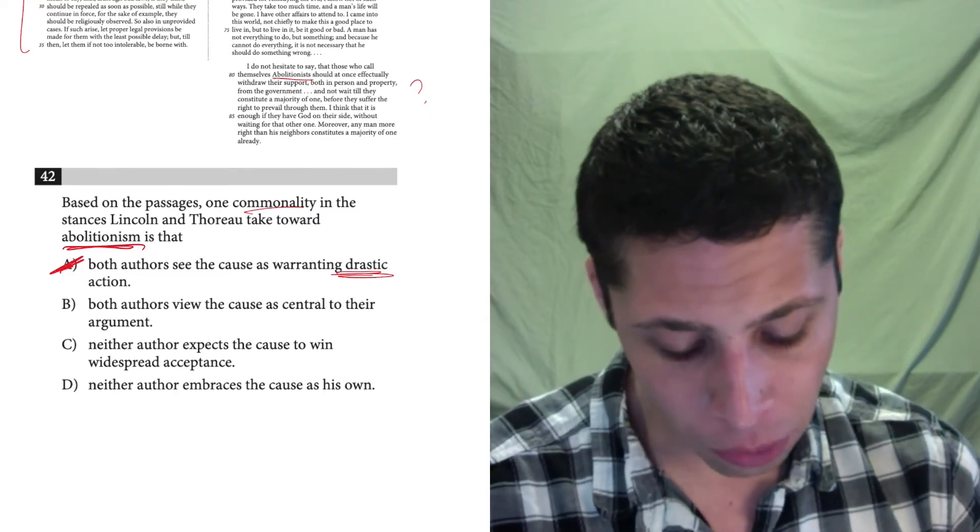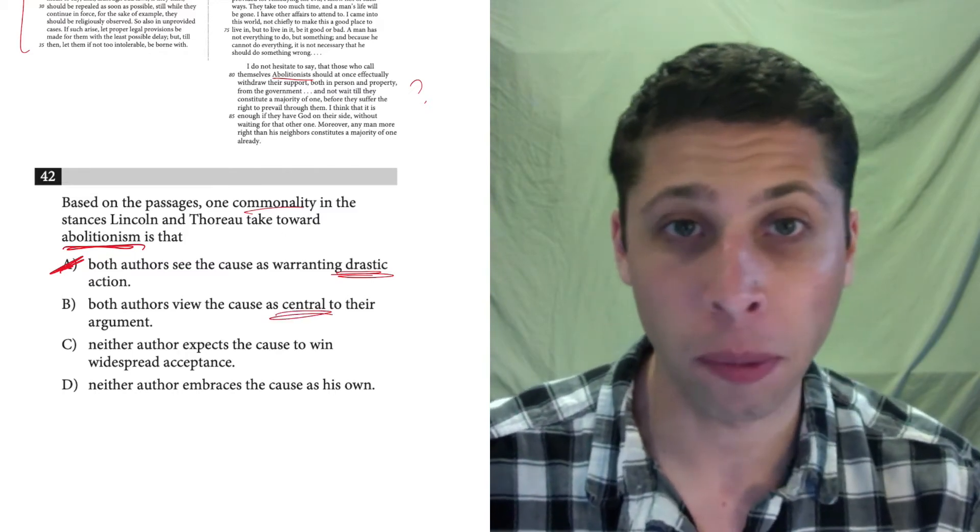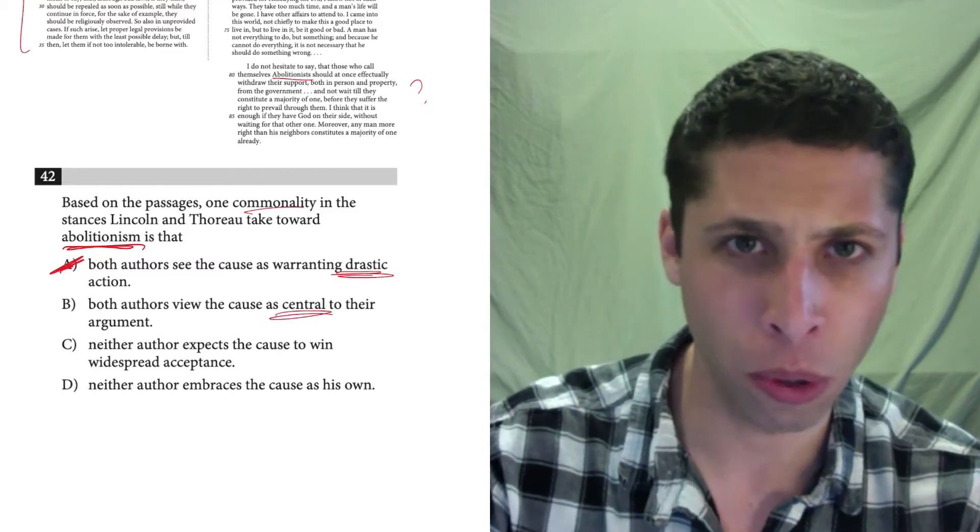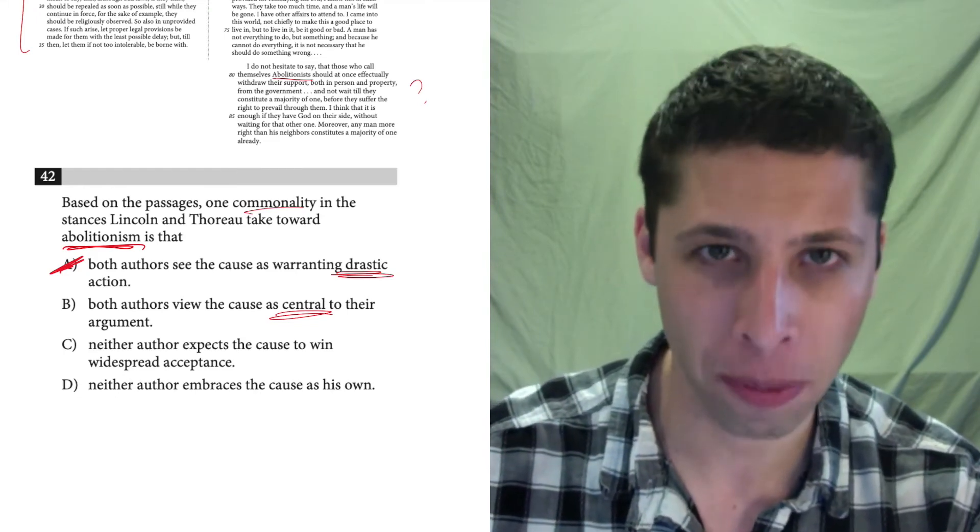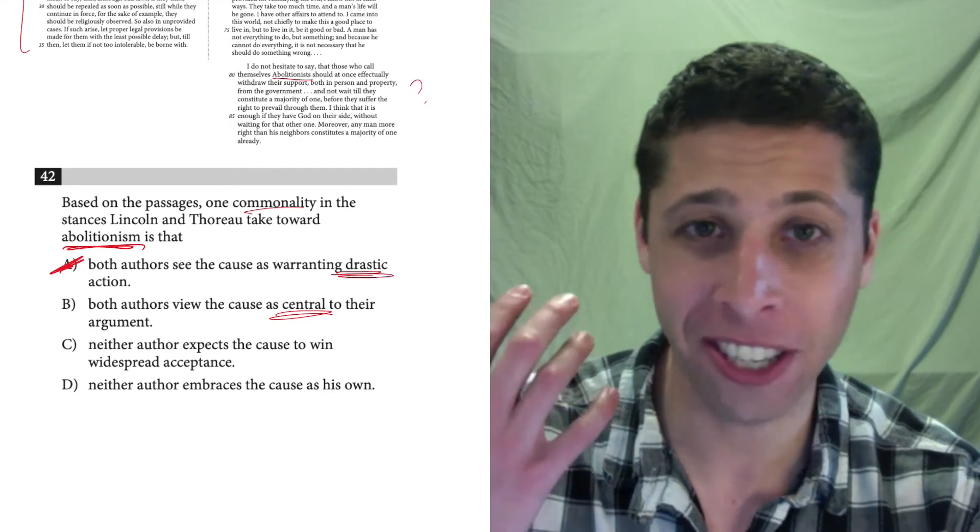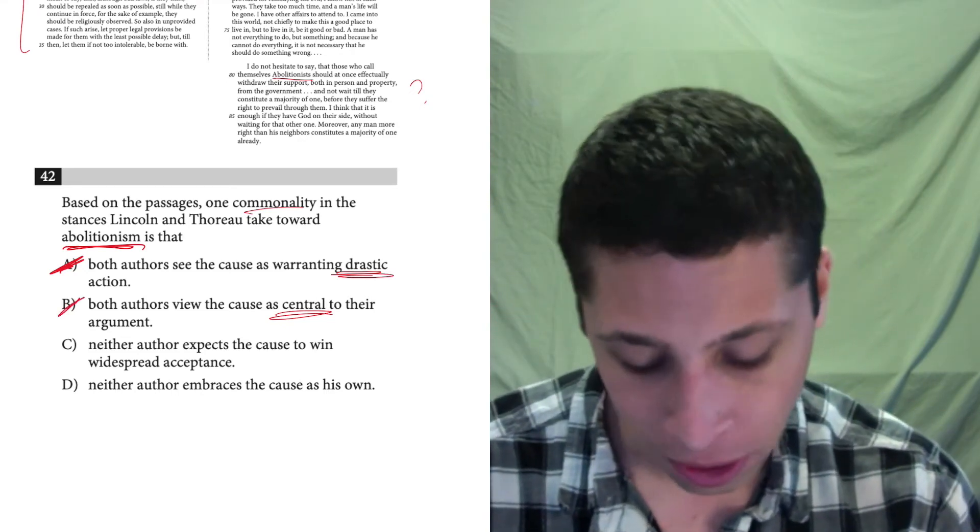Choice B. Both authors view the cause as central to their argument. Well, I just know that from my own experience, right? We just have to skim for this word. It's mentioned briefly at the end of each passage. If it was central to their argument, we would have read about it before. So, the fact that we just had to search for abolitionism tells us it's not central to their argument.